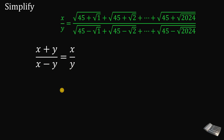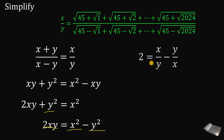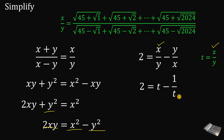We cross-multiply to get xy plus y squared equals x squared minus xy. Adding xy to both sides gives 2xy plus y squared equals x squared. Subtracting y squared gives 2xy equals x squared minus y squared. Dividing all terms by xy gives 2 equals x over y minus y over x. Since y over x is the reciprocal of x over y, let t equal x over y. The equation becomes 2 equals t minus 1 over t.